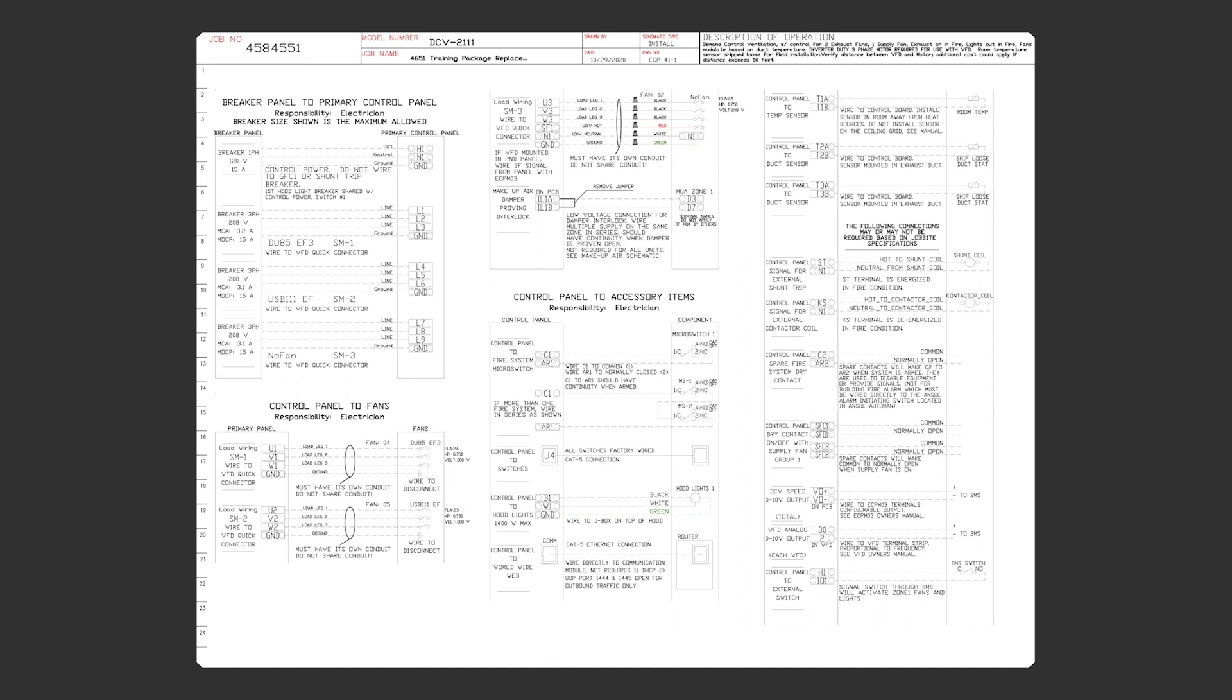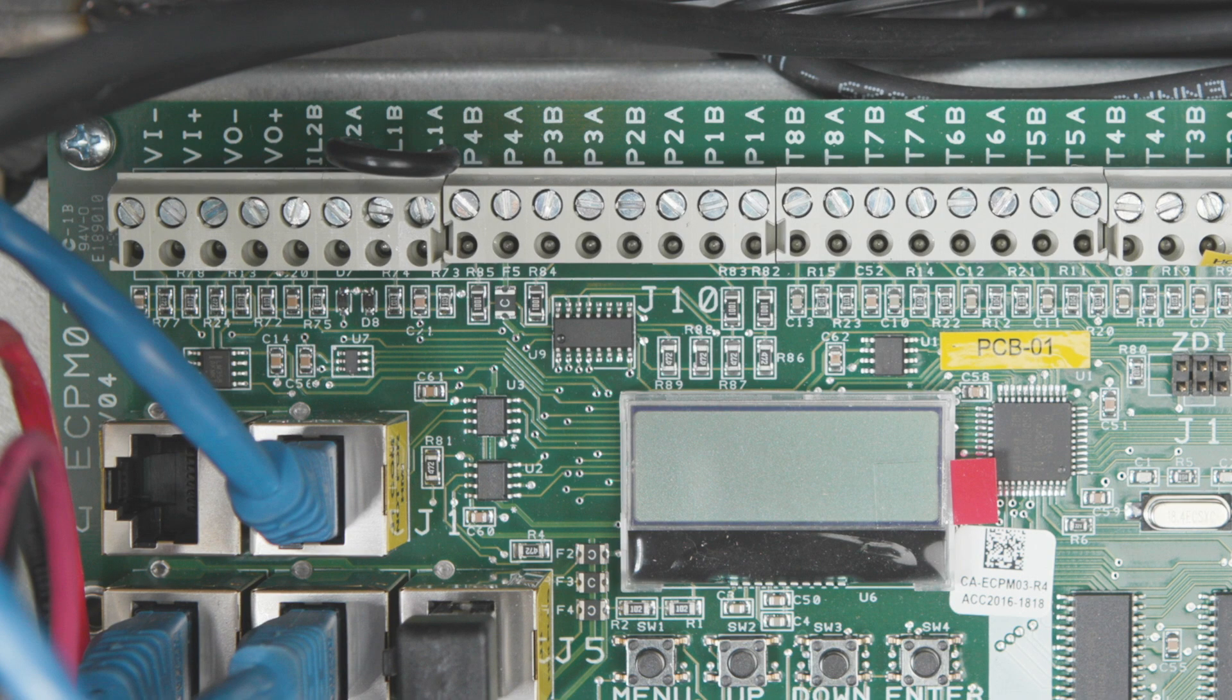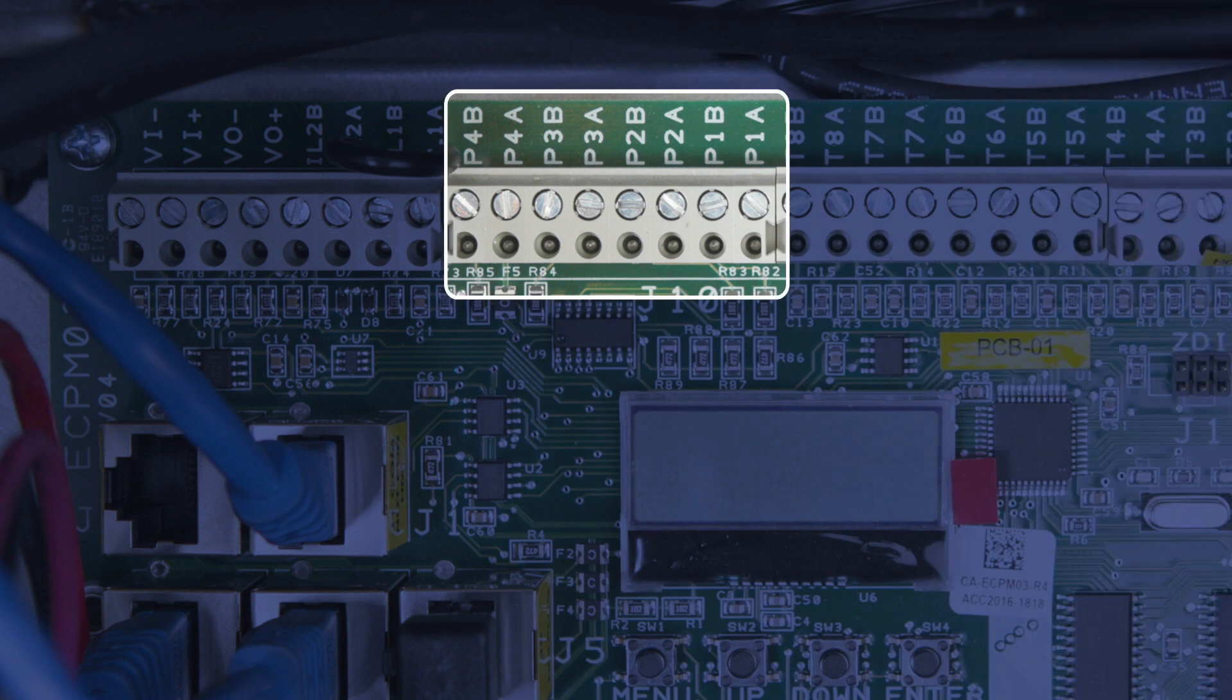Solid lines are factory-wired for you, and dashed lines will require field wiring. One specific note on wiring EC motors to our circuit board is note that the P terminals shown here are polarity-sensitive. So double-check this before applying power. Reversing polarity will damage the terminals.